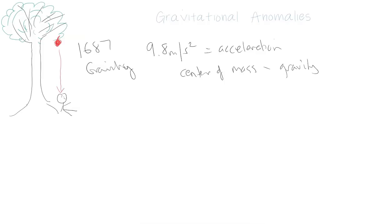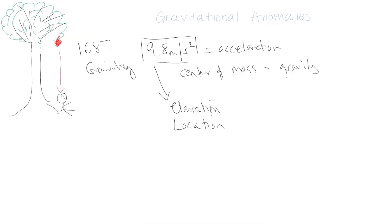Earth is obviously under the sun's gravitational pull, and there's gravity in terms of the moon and other aspects of the solar system and astronomy, but this is more consistent. However, if you change elevation or your location on the Earth, this 9.8 meters per second squared becomes more of a range — it's more of an average.